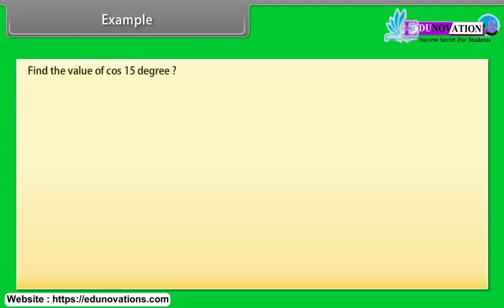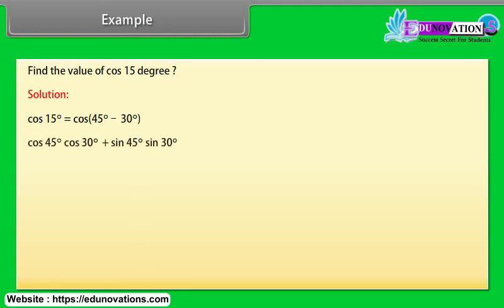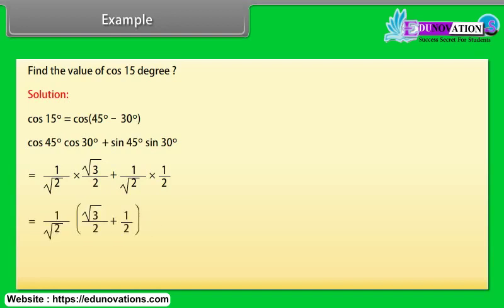Example: Find the value of cos 15°. Solution: cos 15° = cos(45° − 30°) = cos 45° cos 30° + sin 45° sin 30° = (1/√2)(√3/2) + (1/√2)(1/2) = (1/√2)(√3/2 + 1/2) = (√3 + 1)/(2√2).